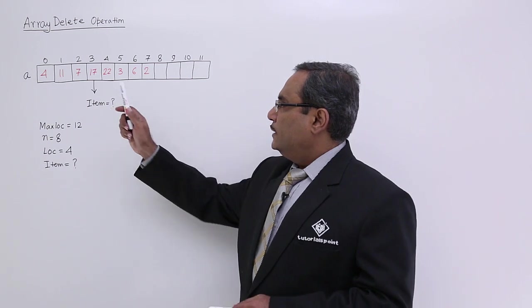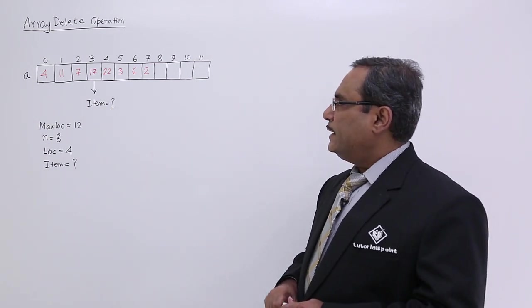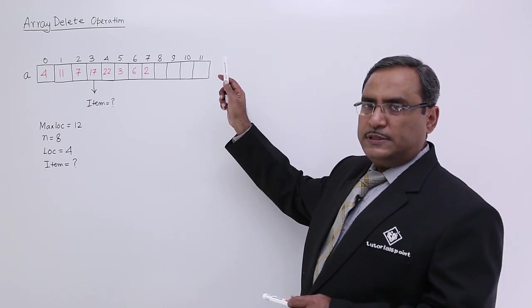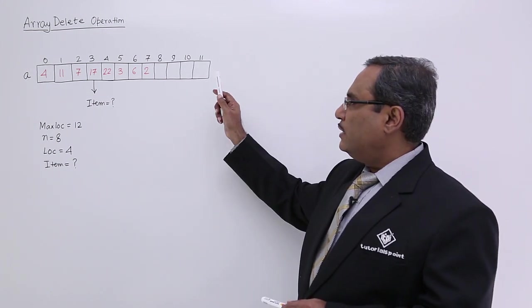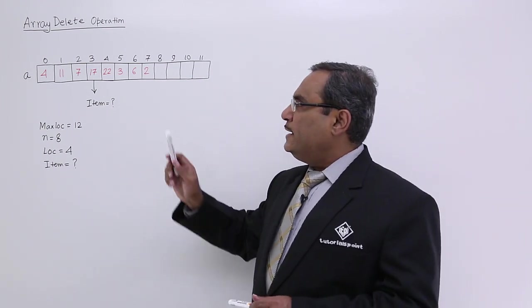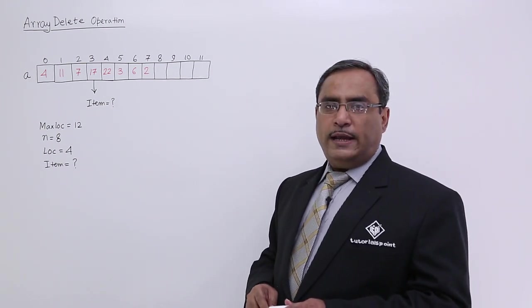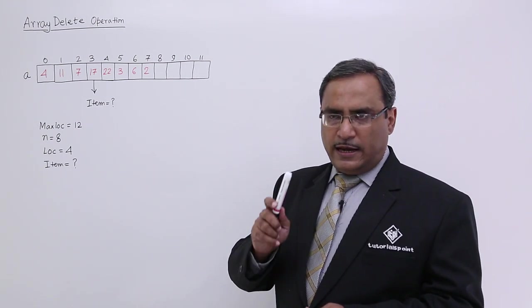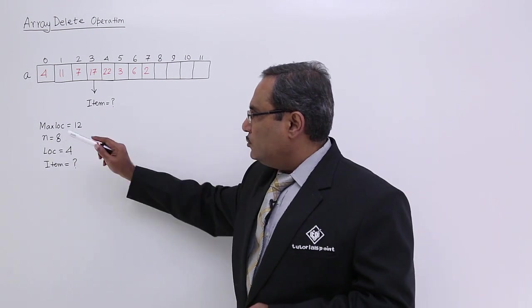Now see, so here is my array, sample array given which is having 12 locations. So subscript is ranging from 0 to 11. So max lock is equal to 12 and it is having n valid data. So n valid data means here value of n is equal to 8. So we are having 8 valid data, so n is equal to 8.